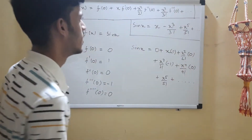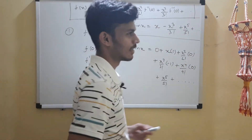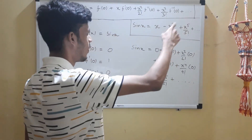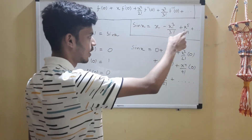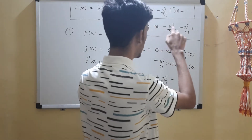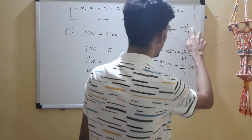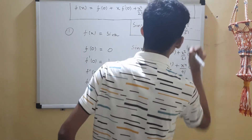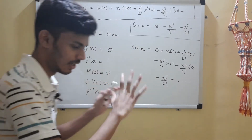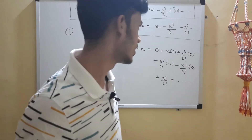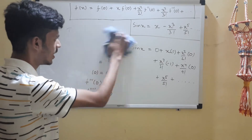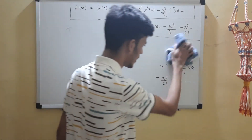If you had to memorize this, you'd say: only odd terms appear, with alternating plus and minus signs. But now you can derive it in under 30 seconds using the formula — I'm only taking longer because I'm explaining each step. Let's move on to the second function.